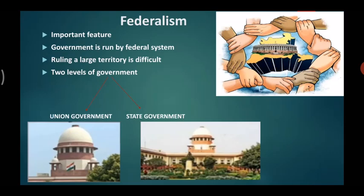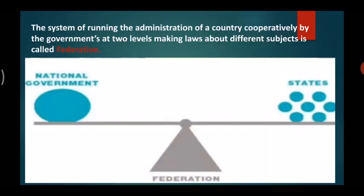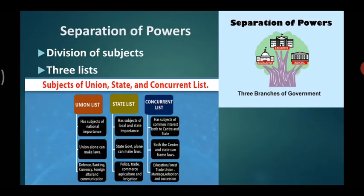The system of running the administration of a country cooperatively by governments at two levels, making laws about different subjects, is called federation. As you can see in the picture, the union government carries out administration of the entire country, while the state government carries out administration individually of different states.